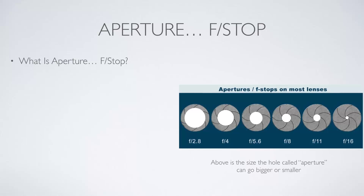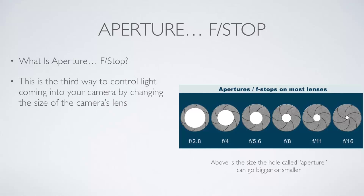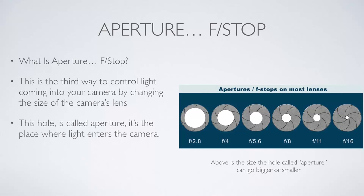So, what is aperture or f-stop? Basically, aperture is the third way that we control light coming into the camera and we do that by changing the size of the camera's lens, as you can see on my diagram to the right. Aperture is how big or small the hole called aperture can go, and it's the place where light actually enters the camera.